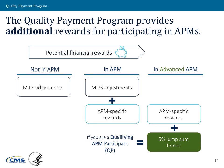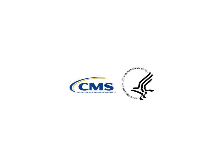On the far right side, in an advanced APM, you have the opportunity to be excluded from MIPS — no reporting requirements, no MIPS payment adjustments. You get those APM-specific rewards, and for advanced APMs those tend to be a little bit larger than for non-advanced APMs. Finally, advanced APM participants receive that 5% lump sum bonus as an automatic payment. Thank you for viewing this presentation. For more information, please visit the Quality Payment Program Portal at qpp.cms.gov.